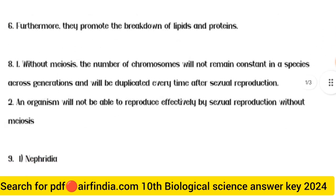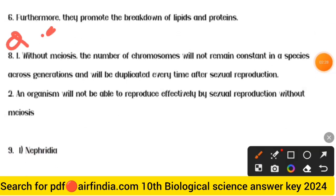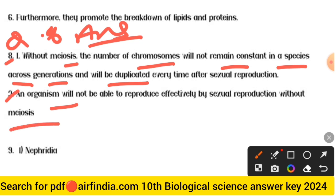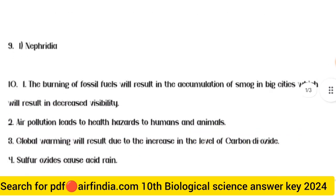Question 8 answer: Without meiosis, the number of chromosomes will not remain constant in a species across generations and will be duplicated every time after sexual reproduction. An organism will not be able to reproduce effectively by sexual reproduction without meiosis. Question 9 answer: Nephridia.